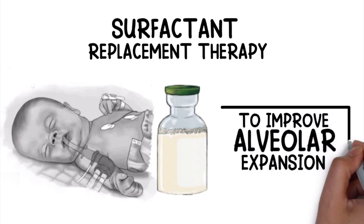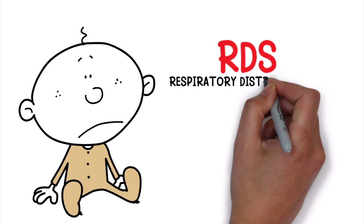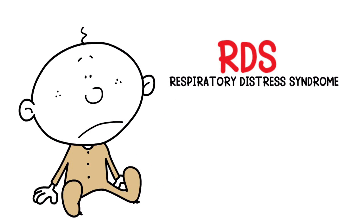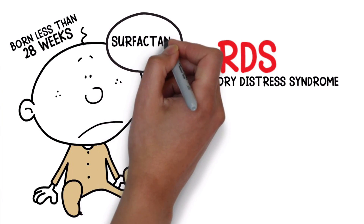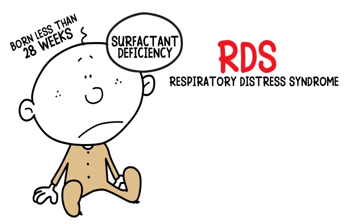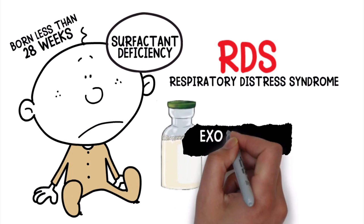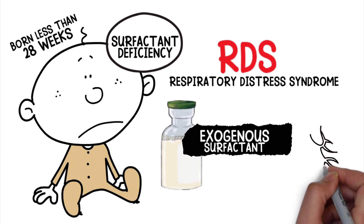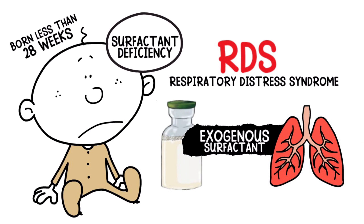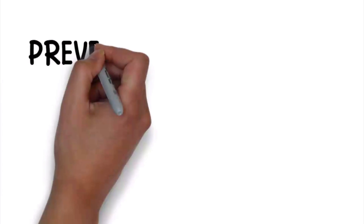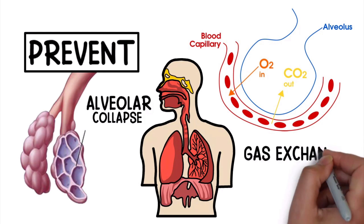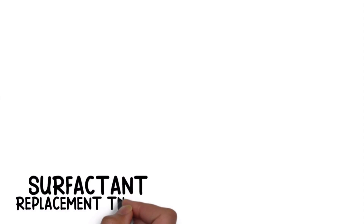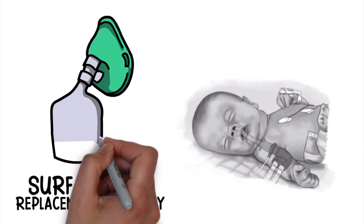It's most often indicated in infants with RDS, which stands for Respiratory Distress Syndrome. RDS is a condition in preterm infants born less than 28 weeks gestational age that results in a surfactant deficiency. These infants require the administration of exogenous surfactant until their lungs mature enough to produce it on their own, which prevents alveolar collapse so that breathing and gas exchange can occur.